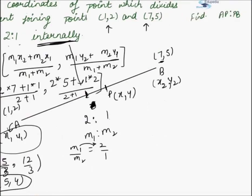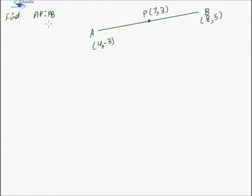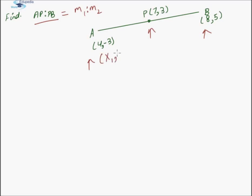Now let us have the second question. Here we need to find the ratio AP:PB where the coordinates of A, B, and P are given. Let us denote this ratio as M1:M2. Let point A be denoted by x1,y1 and point B by x2,y2, and point P by x,y.